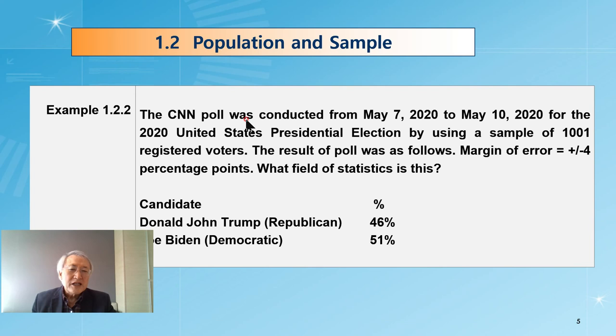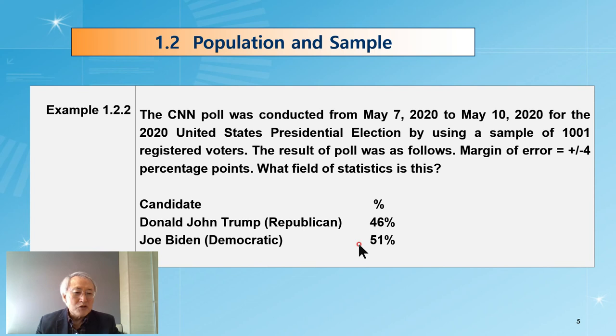Instead, this example says the CNN poll was conducted during this period. They say Donald Trump got 46 percent and Joe Biden is 51 percent. But at the time, they collected just a sample of 1,001. Then, this is sample data. By using this, we are going to estimate the population characteristic, in this case, population percentage of who prefers this candidate.